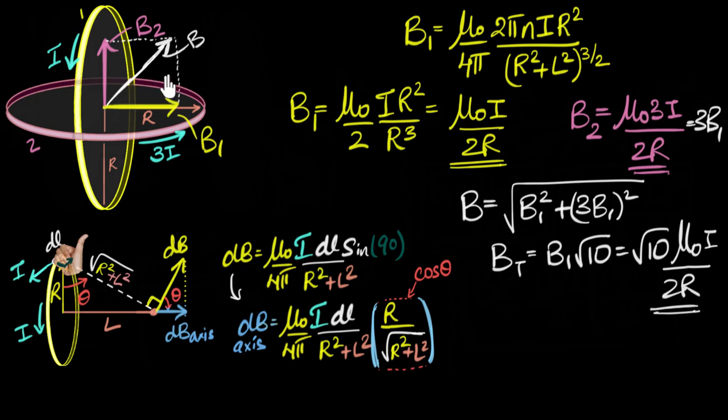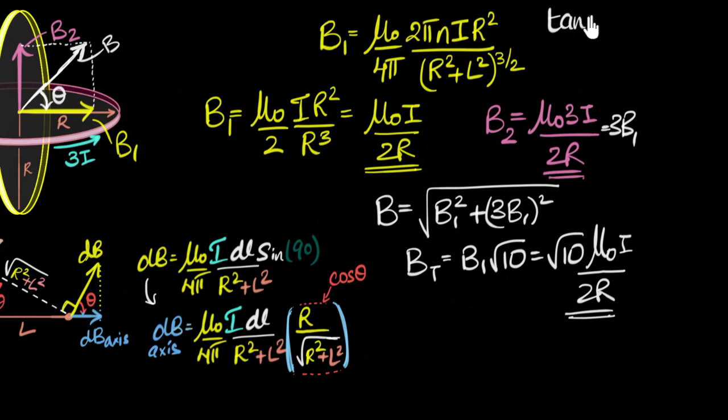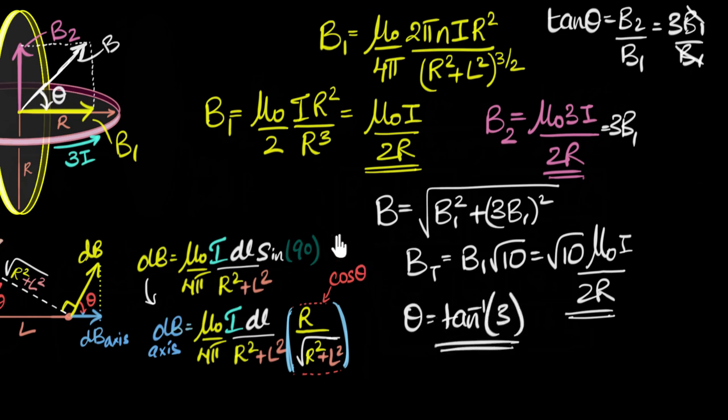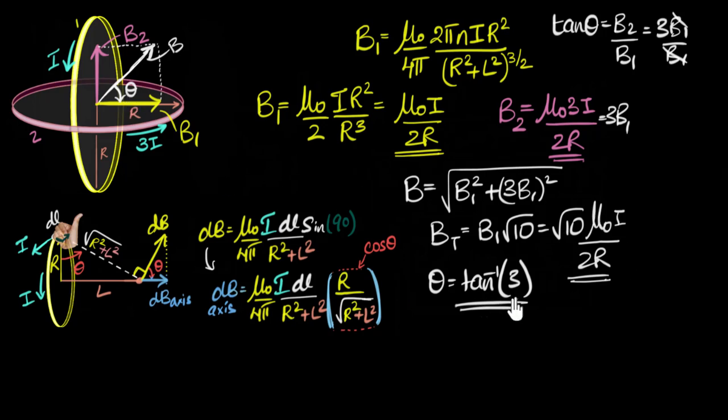And what's the angle? What's the direction? Well, let's call this angle as theta. Then I can use tan theta. So tan theta is going to be the opposite side, which is B2 divided by the adjacent side, B1. And we know B2 is three B1, so that's three B1 by B1. And it cancels out. So theta is going to be tan inverse of three. And I'm not going to simplify this any further. So I know now that the total magnetic field is this much, and it makes an angle of tan inverse of three with respect to the horizontal, or with respect to the second coil. And there we go.